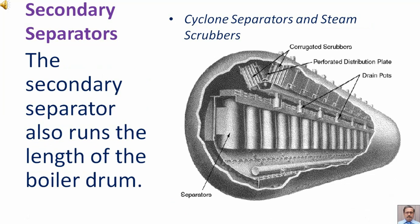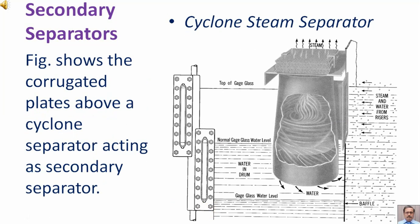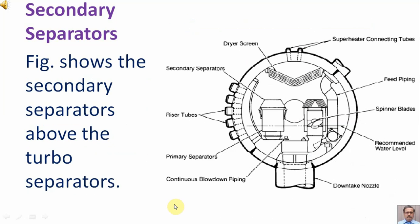The secondary separator also runs the length of the boiler drum. Figure shows the corrugated plates above a cyclone separator acting as secondary separator. Figure shows the secondary separators above the turbo separators.